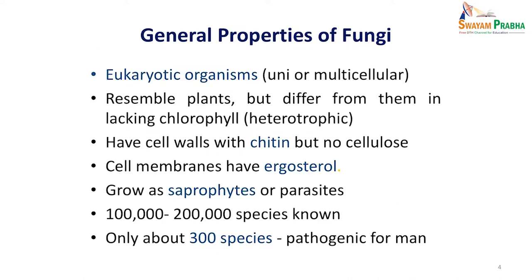As far as their properties are concerned, fungi are eukaryotic organisms, which could be unicellular or multicellular. They resemble plants but differ because they do not have chlorophyll, so they cannot make food of their own. They have cell walls with chitin but no cellulose. Cell membranes have ergosterol and they usually grow as saprophytes or parasites. Many species are known, but only about 300 species are pathogenic to humans.